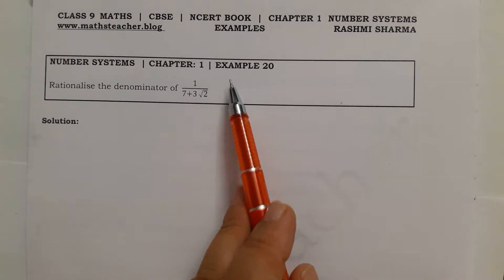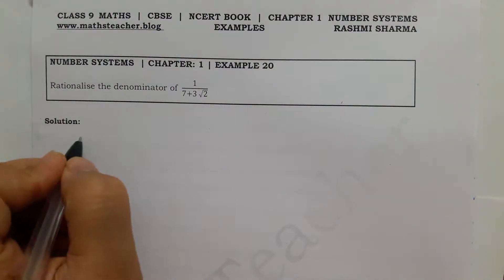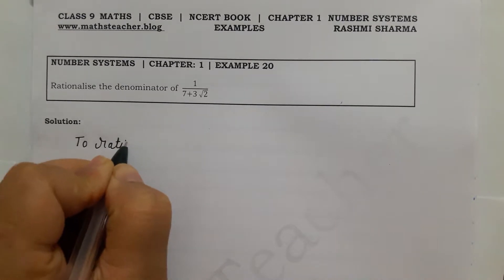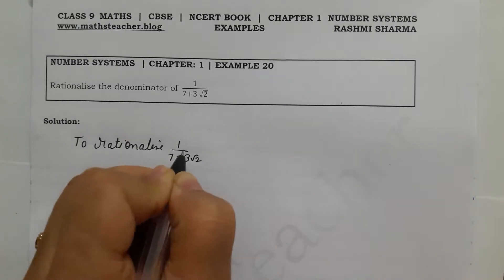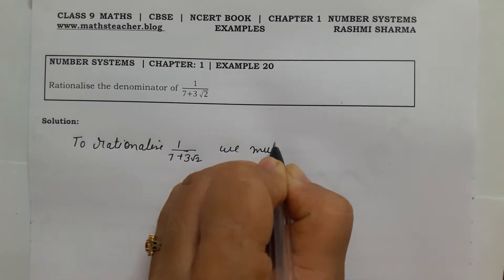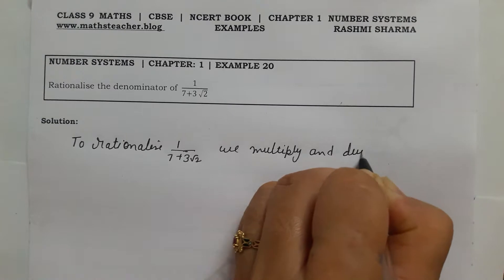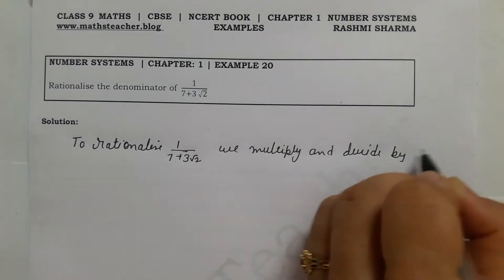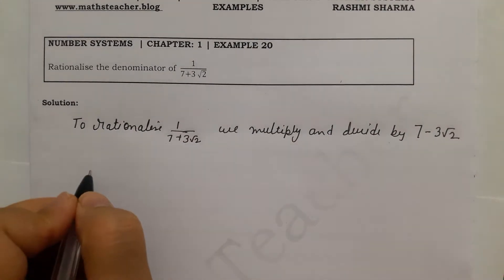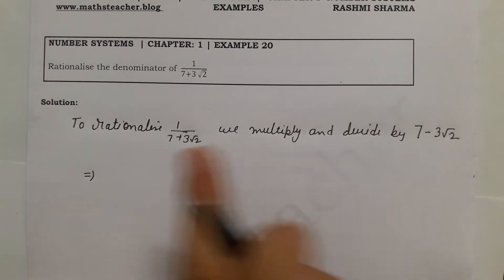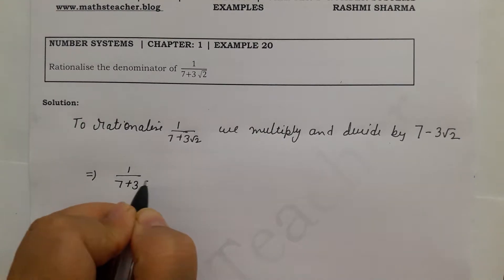To rationalize the denominator, we multiply and divide by the conjugate. Since we have a plus sign in the denominator, we multiply and divide by 7 minus 3 root 2. So we multiply and divide 1 upon 7 plus 3 root 2 by 7 minus 3 root 2.